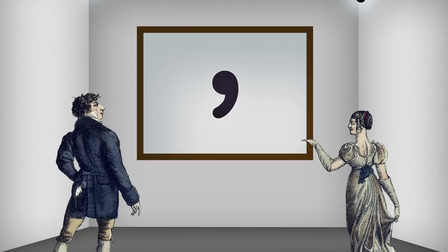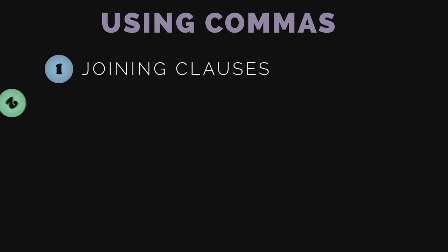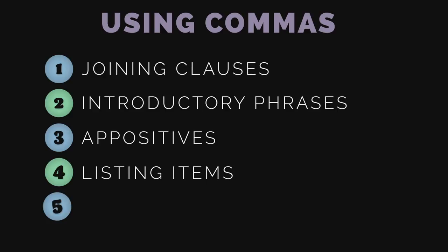In this video, we will look at basic comma usage including joining clauses, introductory phrases, appositives, listing items, and coordinate adjectives. Keep in mind that certain comma rules and usages are not addressed in this video and that exceptions exist for almost every rule in the English language.